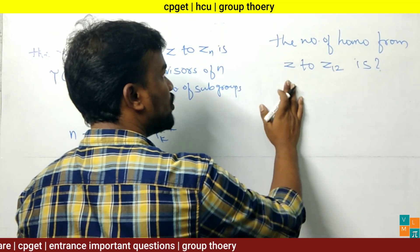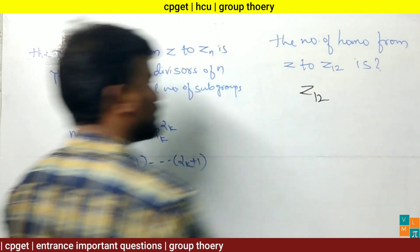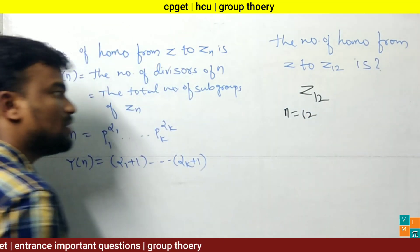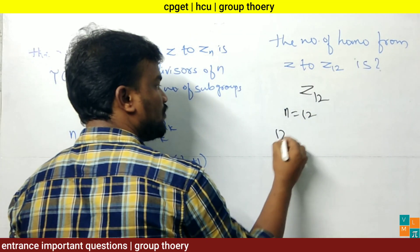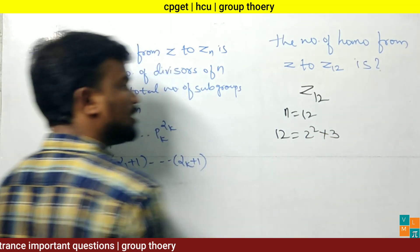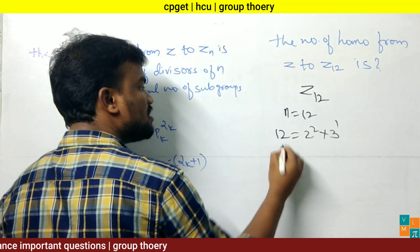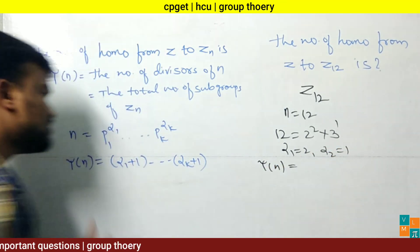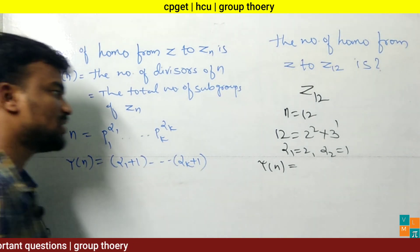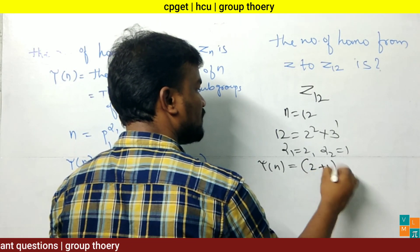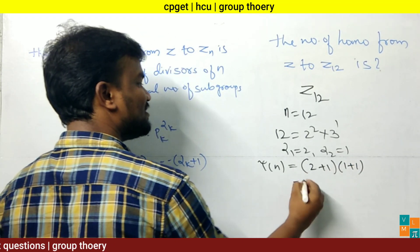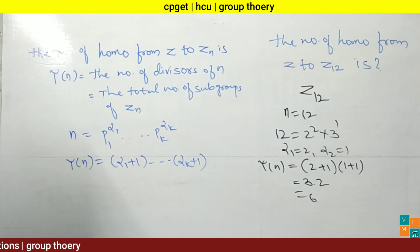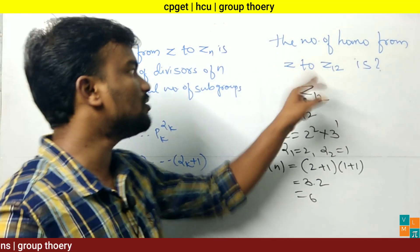Problem: find the number of homomorphisms from Z to Z₁₂. Here n = 12. Prime factorization of 12 is 2² × 3¹, so α₁ = 2 and α₂ = 1. Therefore τ(12) = (2+1)(1+1) = 3 × 2 = 6. There are 6 homomorphisms from Z to Z₁₂.